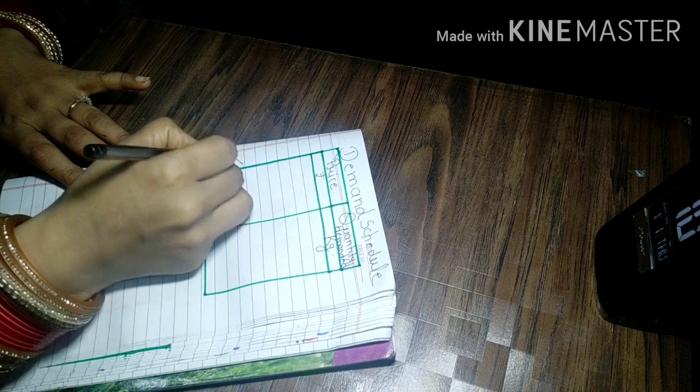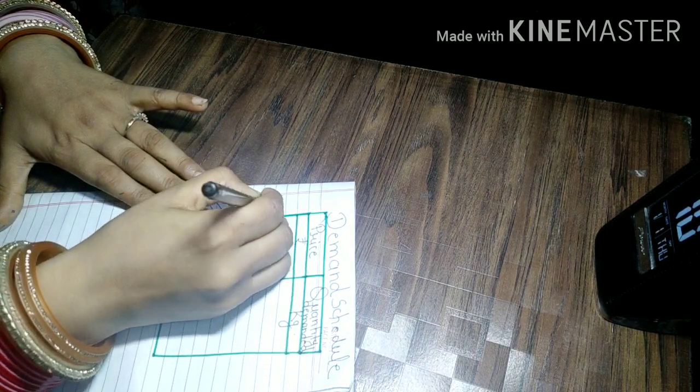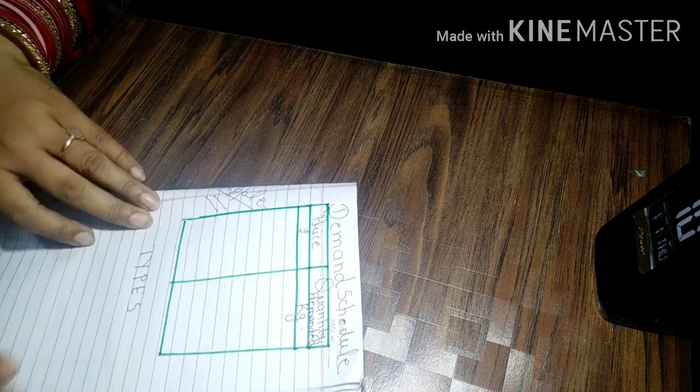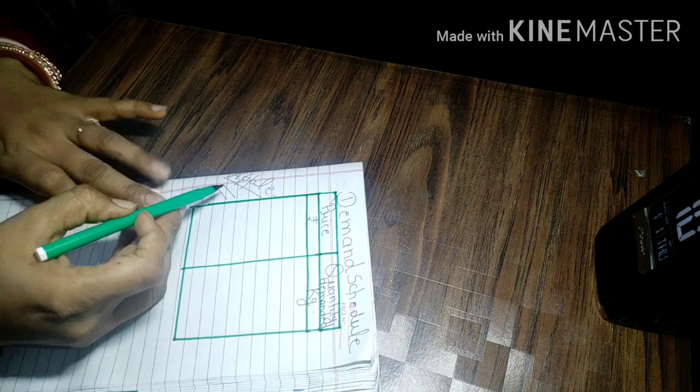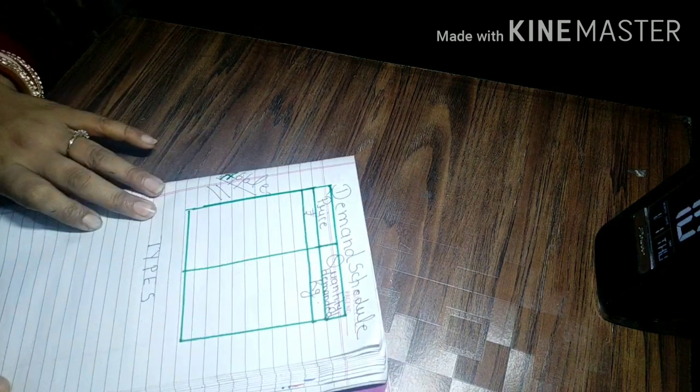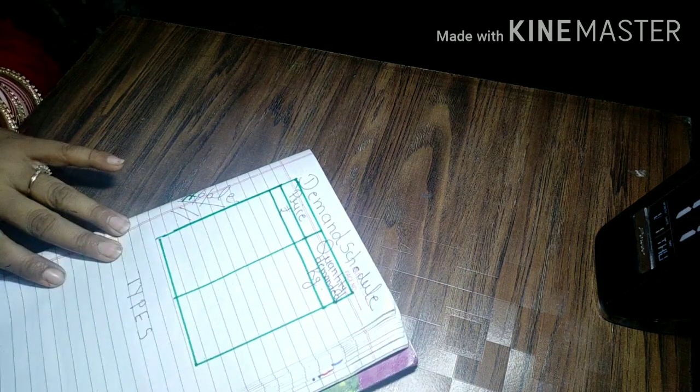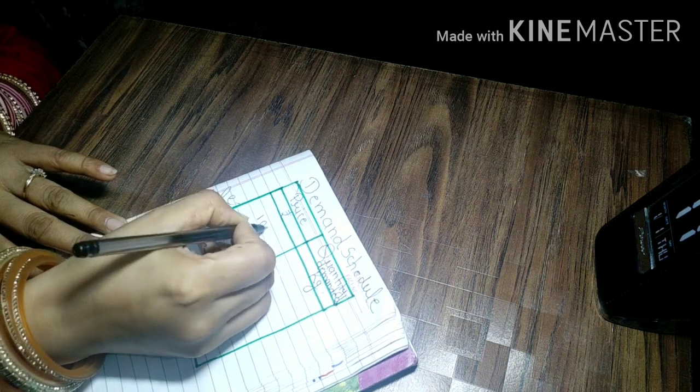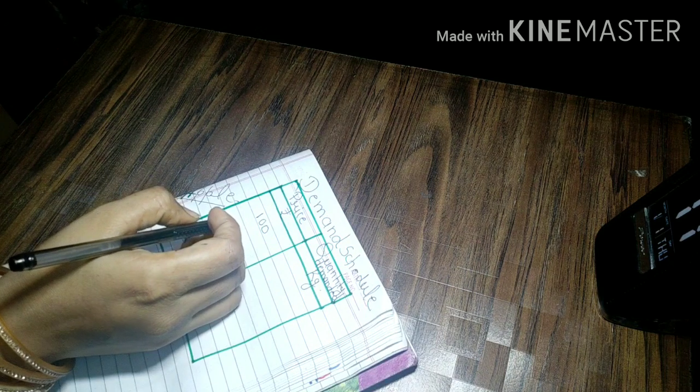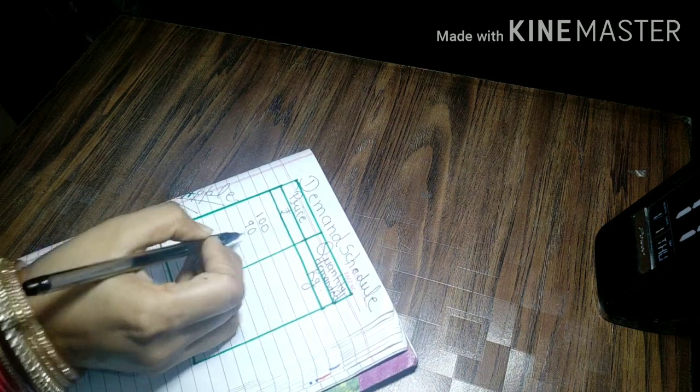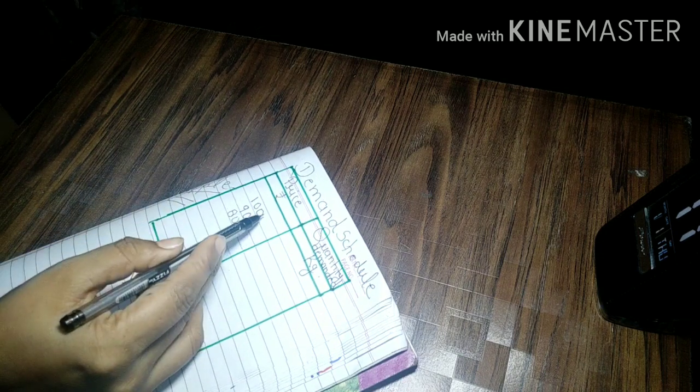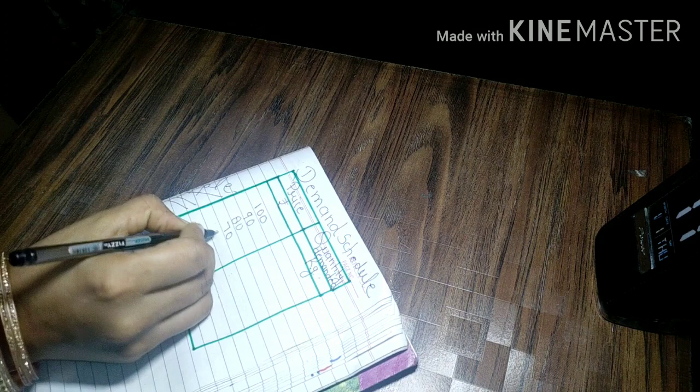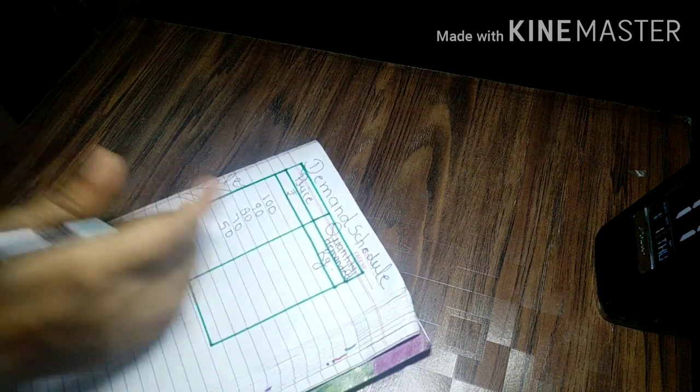Suppose we take a product apple. Suppose there is one consumer in a market and he purchased apple at different prices. The price of apple is rupees 100, after that it falls down to 90, then 80. We are taking here a time period for a month. In a month, prices of apple starting at 100, then 90, then 80, then 70, then 50.